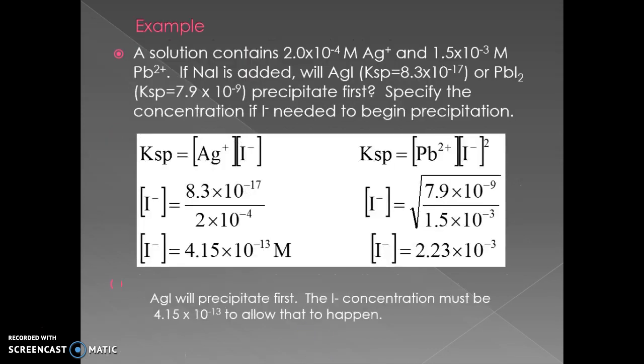Here's a more complicated example. Copper chloride was completely soluble, but here you have a case where we're going to try and separate silver and lead from each other using iodide. Both of them are insoluble or slightly soluble, but their Ksp values are very different.